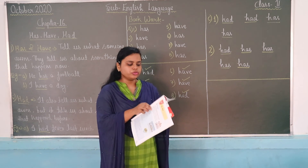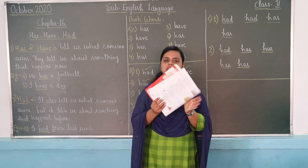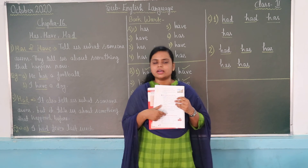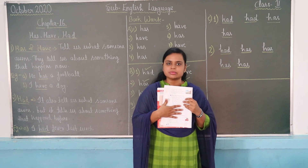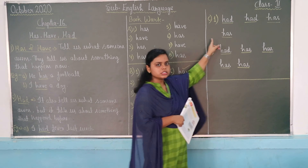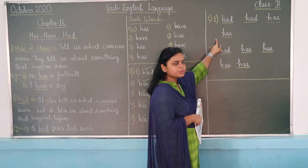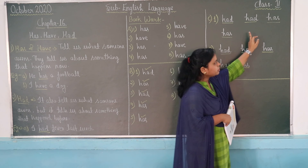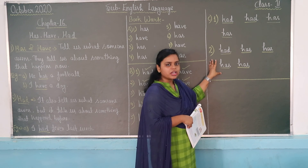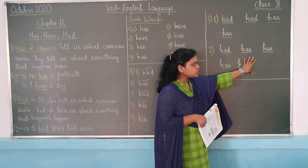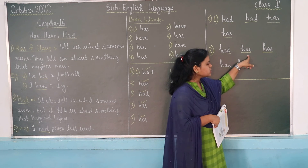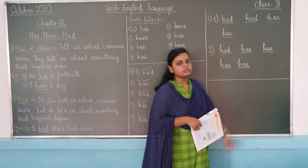For Exercise C, move to page number 56. That is the last exercise of this chapter. Fill in the blanks with Has, Have, or Had. There are two paragraphs. The first paragraph contains four blanks: first — had, second — had, third — has, fourth — had. The second paragraph contains five blanks: first — had, second — has, third — has, fourth — has, fifth — has.